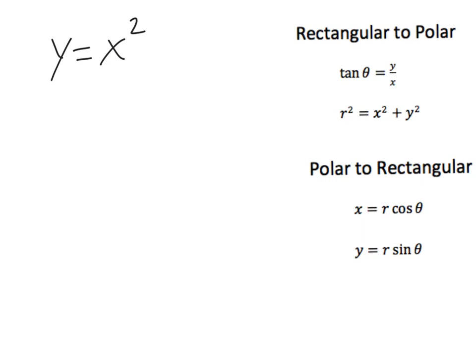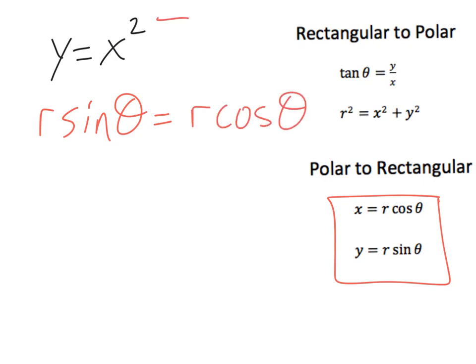So what we've got here is we've got y is equal to x squared. Well down here I've got equations that are solved for x and y. So what I can say here is that y is equal to r sine theta and x is equal to r cosine theta. But this is being squared so this needs to get squared.